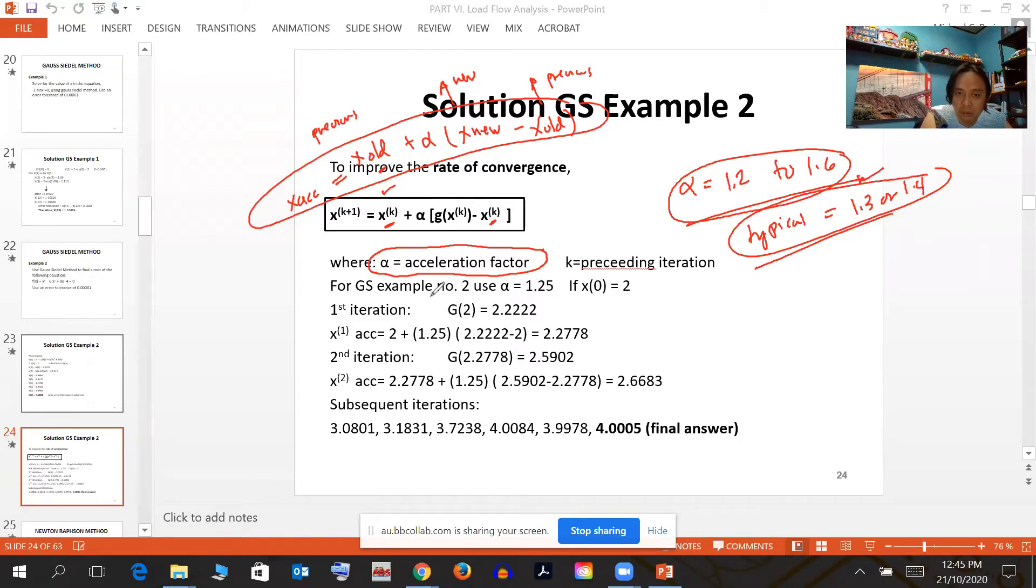For example number 2, we use an acceleration factor of 1.25. If we assume an initial value, the answer is 2. The first iteration gives 2.2222. This is the old value. Using the acceleration equation: 2 plus 1.25 times (2.2222 minus 2) equals 2.2778. The epsilon is 2.2778 minus 2, which hasn't reached the tolerance yet.